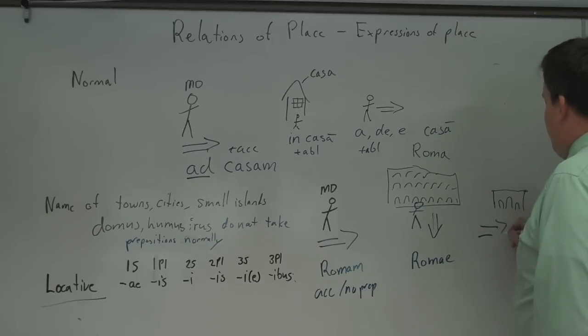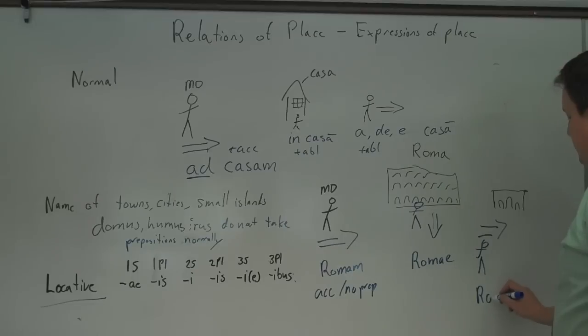And then if you're going away from Rome, Mr. Davis has eaten his fill of pizza, saw the Coliseum, he's sad, he's leaving, he's weeping here. You want to say from Rome, you use the ablative again, but no preposition. So you say Roma, ablative, no prep.